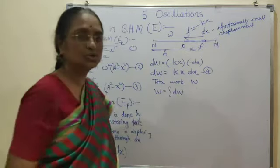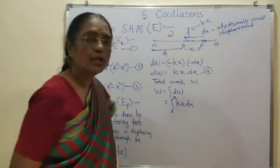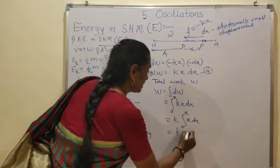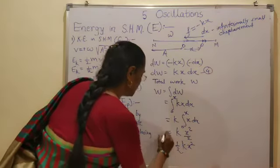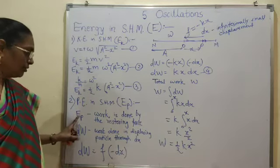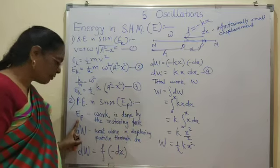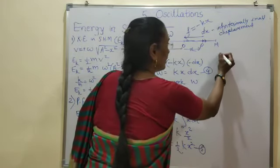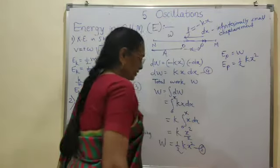Integration of DW gives us the total work. It equals integration of KX DX, where X varies from 0 to X. Taking K outside the integration, we get K times X squared by 2, or half KX squared. This is the total work done. Since potential energy is the work done stored by the restoring force, EP equals W equals half KX squared. This is our 6th relation.